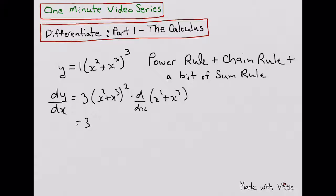So that gives us 3 times x squared plus x cubed squared times, and this is the sum rule in combination with the power rule, just take the derivative of each of these terms, that would be 2x plus 3x squared.